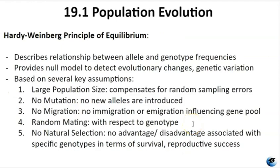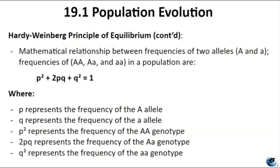The Hardy-Weinberg Principle is based on several key assumptions. First, large population size — the population must be large enough that random sampling errors do not significantly affect allele frequency. Second, no mutation — no new mutations introducing new alleles into the population. Third, no migration — no immigration or emigration influencing the gene pool. Fourth, random mating — mating within the population occurs randomly with respect to genotype. And fifth, no natural selection — no advantage or disadvantage is associated with specific genotypes in terms of survival and reproductive success. Under these assumptions, allele and genotype frequencies remain constant from generation to generation.